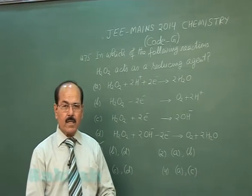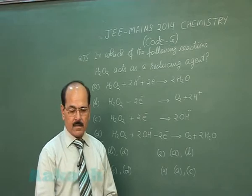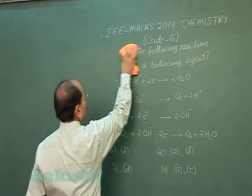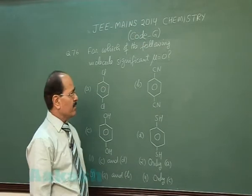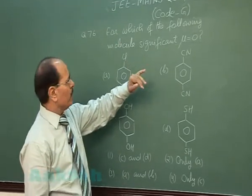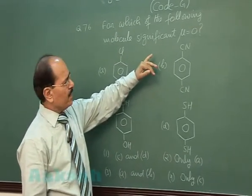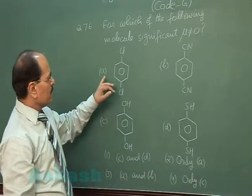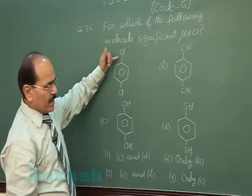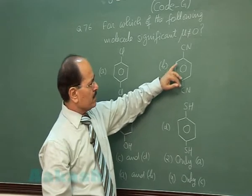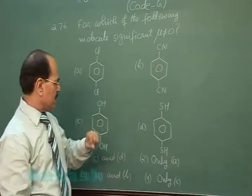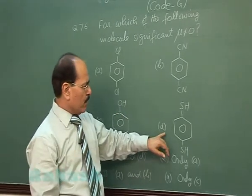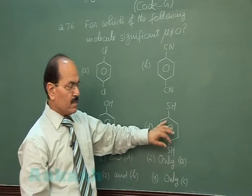Question number 76: For which of the following molecules is the significant dipole moment not equal to zero? Compound A is 1,4-dichlorobenzene, compound B is 1,4-dicyanobenzene, compound C is quinol, and compound D is 1,4-benzenedithiol.